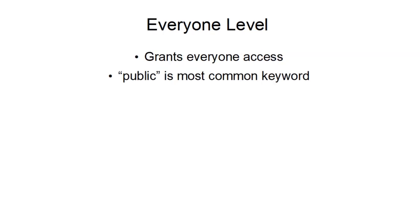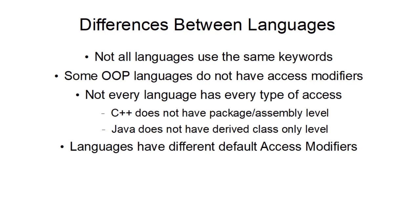The everyone level grants access to everyone. Public is the most common keyword for this. There are differences between languages — the four levels I gave are fairly common and give you a rough idea, but not all of them use the same keyword. Java uses package, whereas C# uses internal.